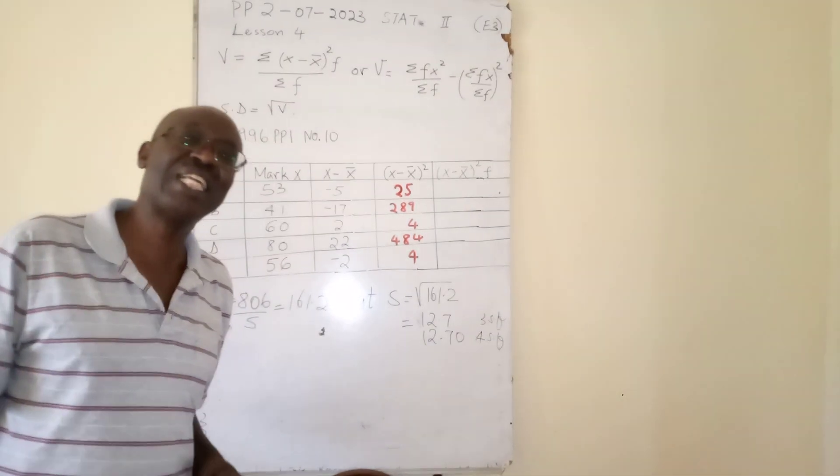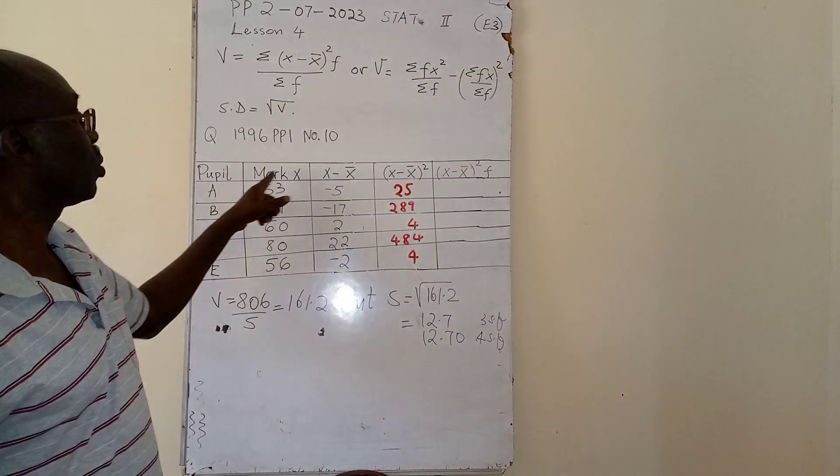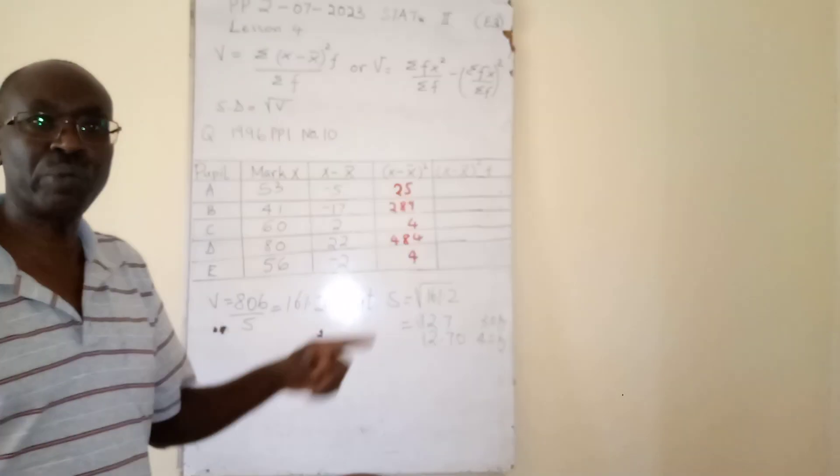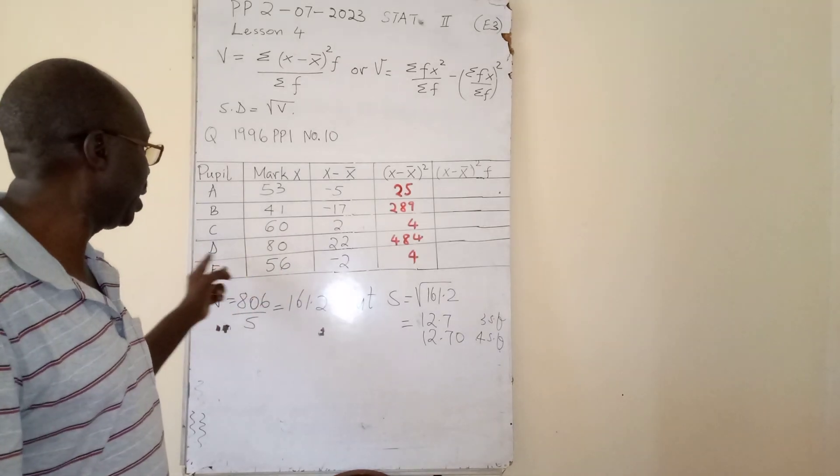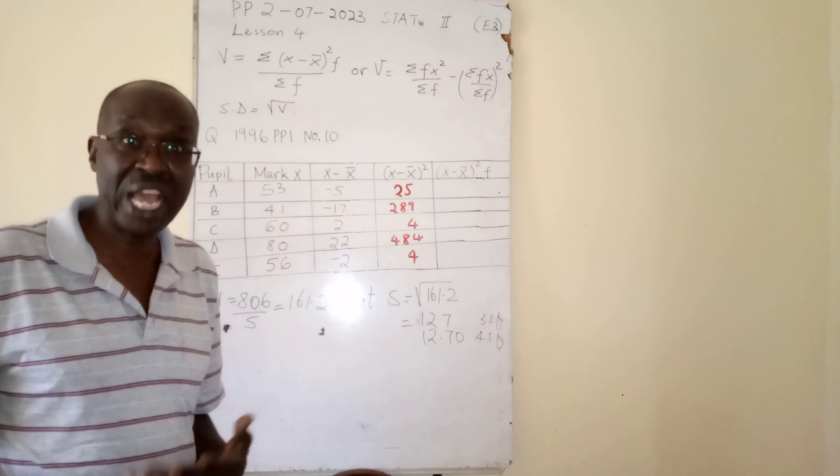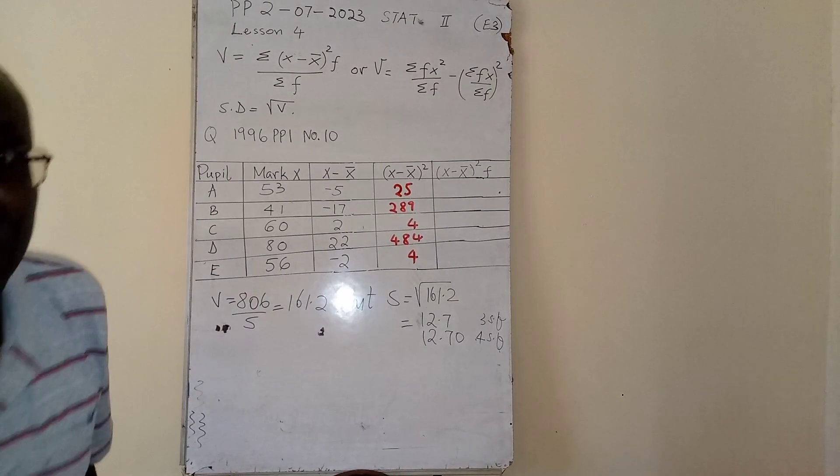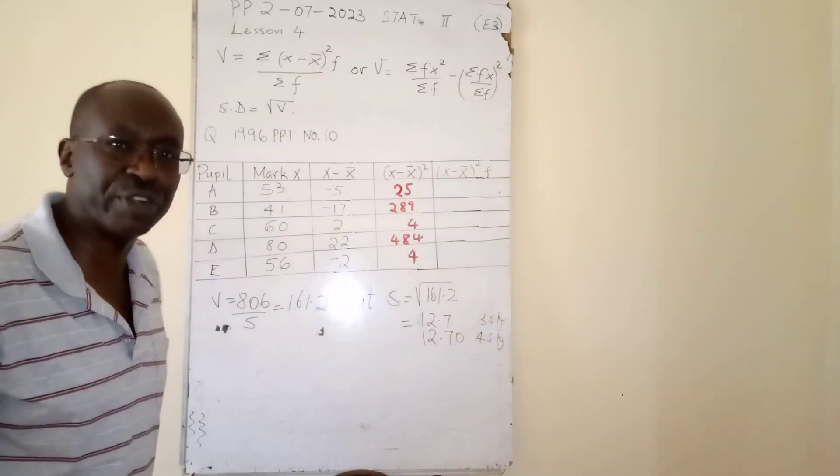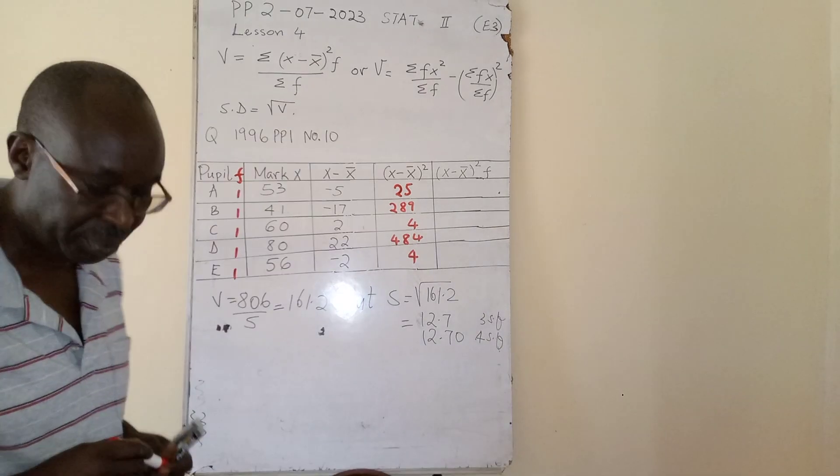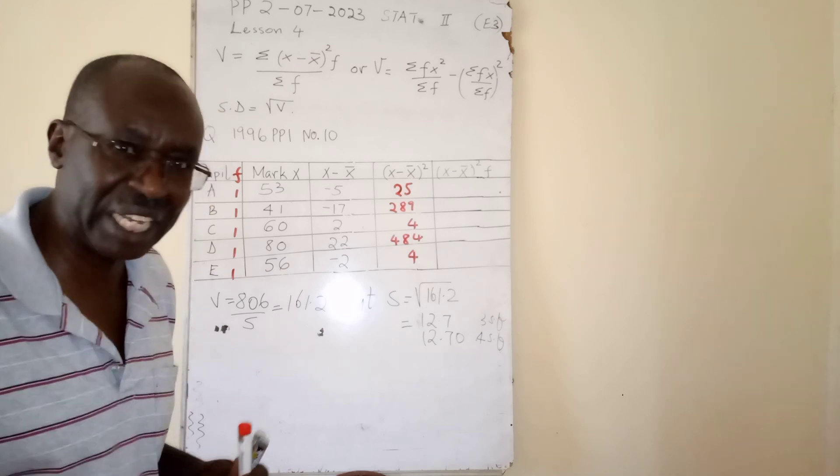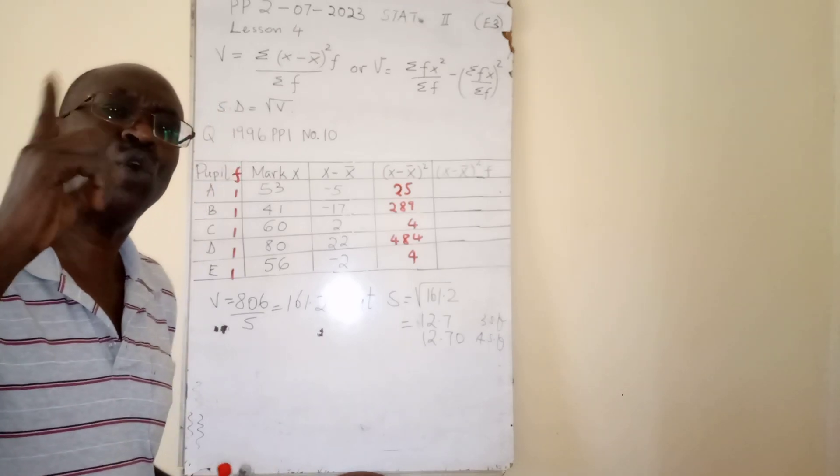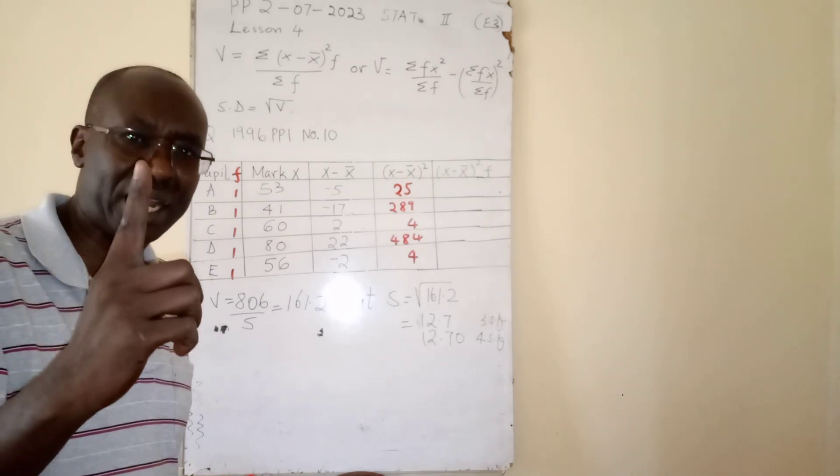It is dealing with the pupils, the students. We have marks: 53 scored by student A, 41 by B, 60 by C, 80 by D, and 56 by E. You can clearly see that these individual students appear only once, which means if I create a column for frequency f, it will be 1, 1, 1, 1, 1. Multiplication by 1 does not change the original number.